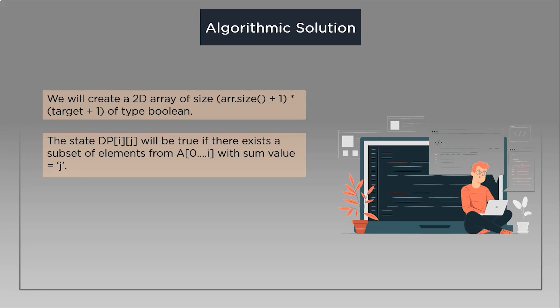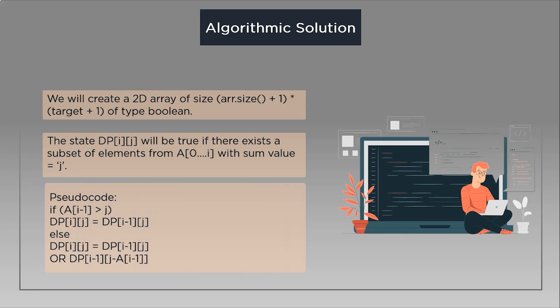Let's look at the pseudo-code. If the current element has a value greater than the current sum value, we will copy the answer from the previous case. And if the current sum value is greater than the i-th element, we will check if any of the previous states have already achieved sum equal to j, or any previous state experienced the value j minus a[i], which solves our purpose.